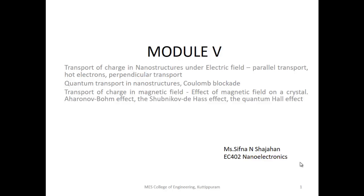Today we will be starting with Module 5: Transport of Charges in Nanostructures under Electric Field. In that we will be discussing Parallel Transport. In the previous sessions, that is in Module 6, we have discussed about various nanostructures, how a heterojunction is formed, tunneling through a heterojunction, two-dimensional electron gas formation, modulation doping — all those things were studied in Module 6. In this module, how carriers are moved inside a quantum well under the influence of an electric field as well as a magnetic field is discussed.